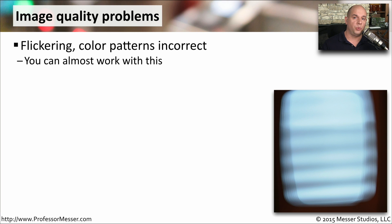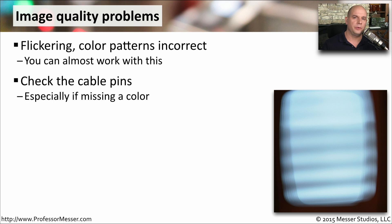It may be that the monitor is working properly and you can see some images on the screen, but you're having problems with the image — perhaps it's flickering or the colors don't look quite right. If you are having problems with flickering or color, the first thing to check is the physical connection. Make sure you check the cables for any bent pins, and look at the interfaces on your computer and on the monitor to make sure there's no problem with the physical interfaces there either.